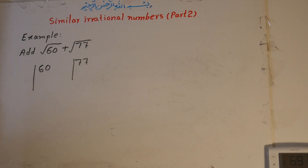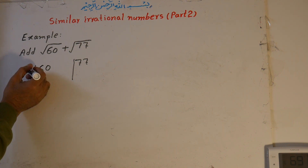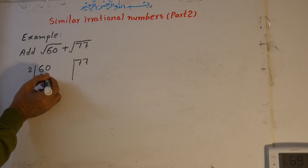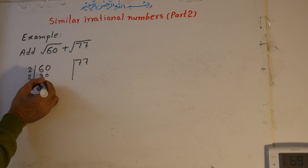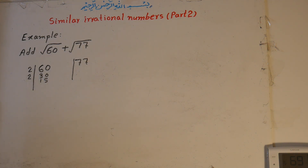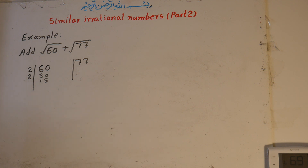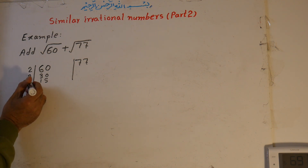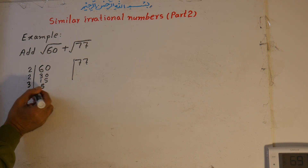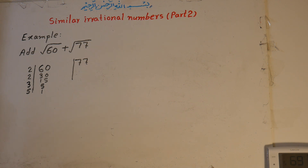For 60: it is divisible by 2, giving 30; again by 2, giving 15; 15 is not divisible by 2 because the last digit is not 0 or even, but the sum of digits is 6, which is divisible by 3. So we factor by 3 to get 5, then factor by 5 to get 1. So 60 = 2 × 2 × 3 × 5.